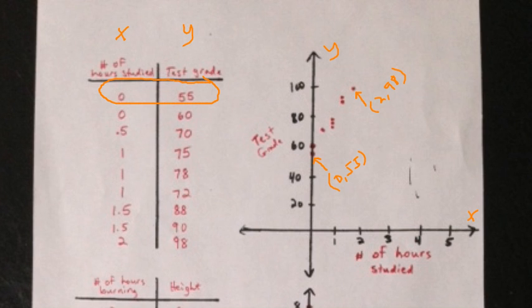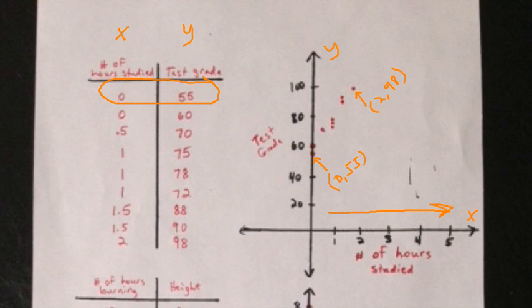Now that we have all of our points plotted on the coordinate plane, we can analyze these points and determine whether or not there's a relationship between the two sets of data. So let's ask ourselves this question: what's happening to the test grades as the number of hours studied increases? So as we move to the right on the x axis, what happens to our y values?